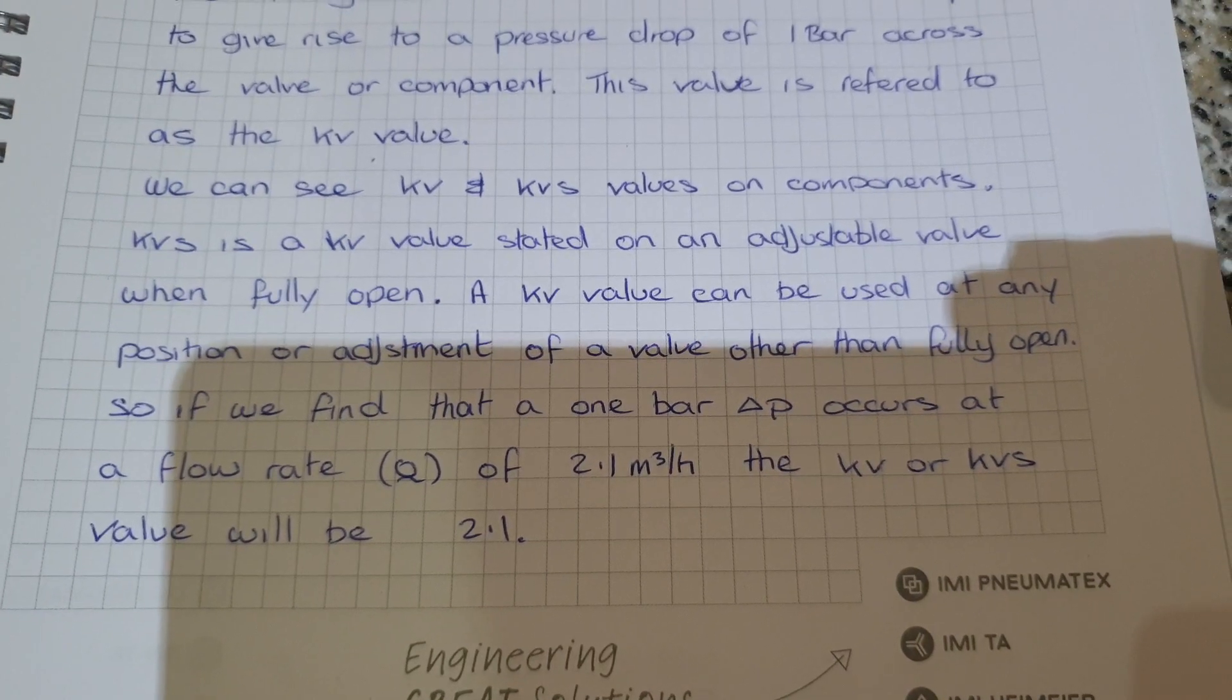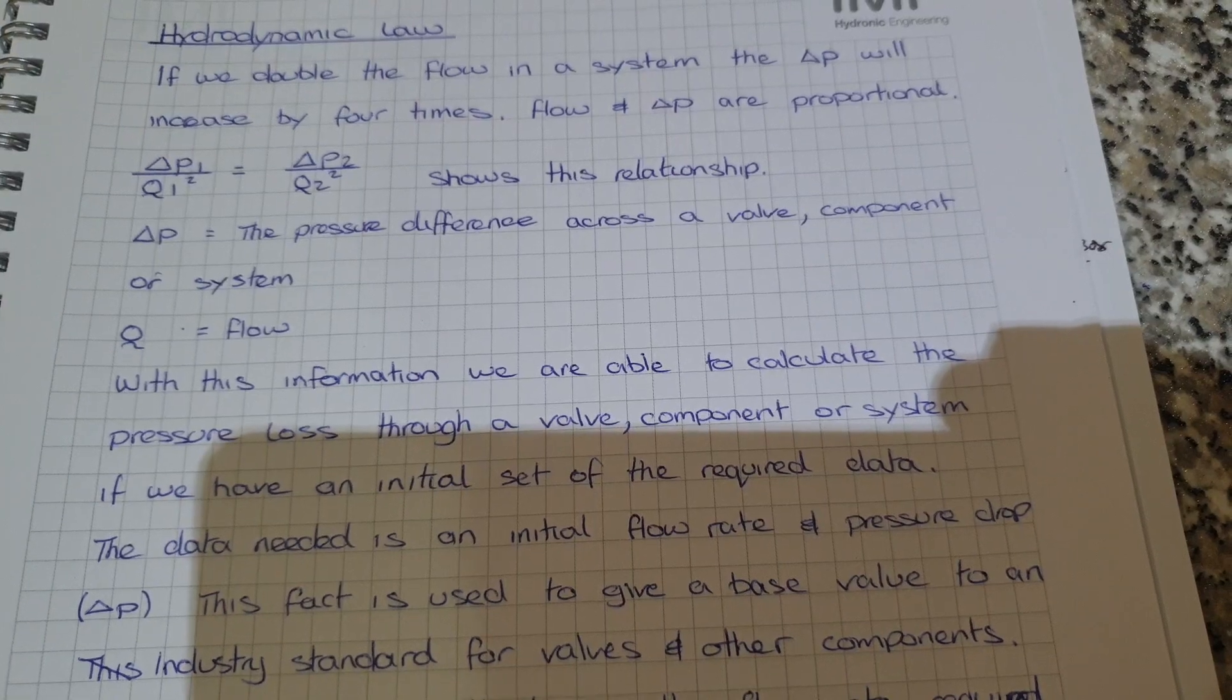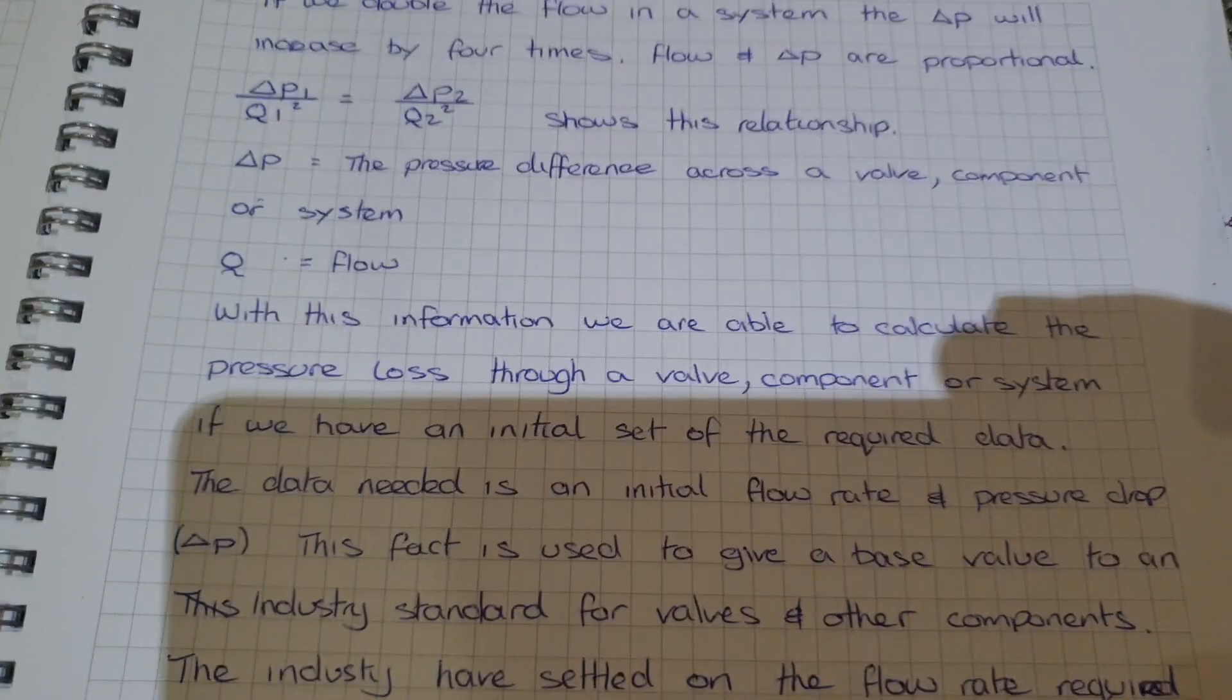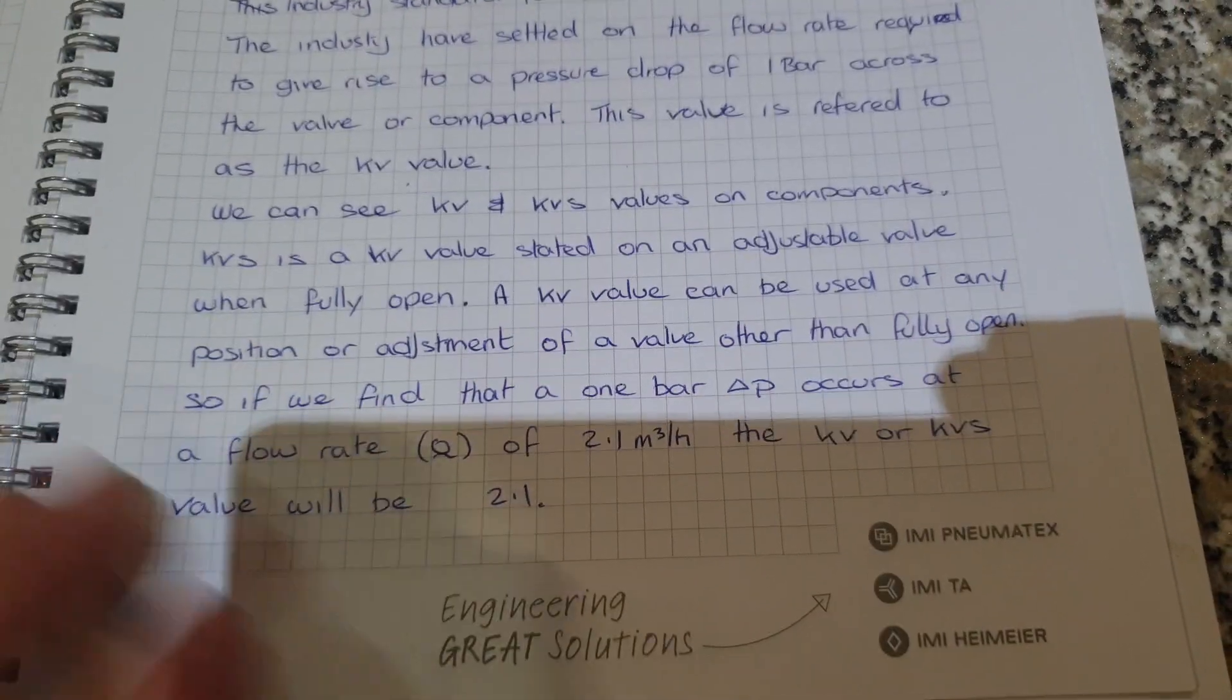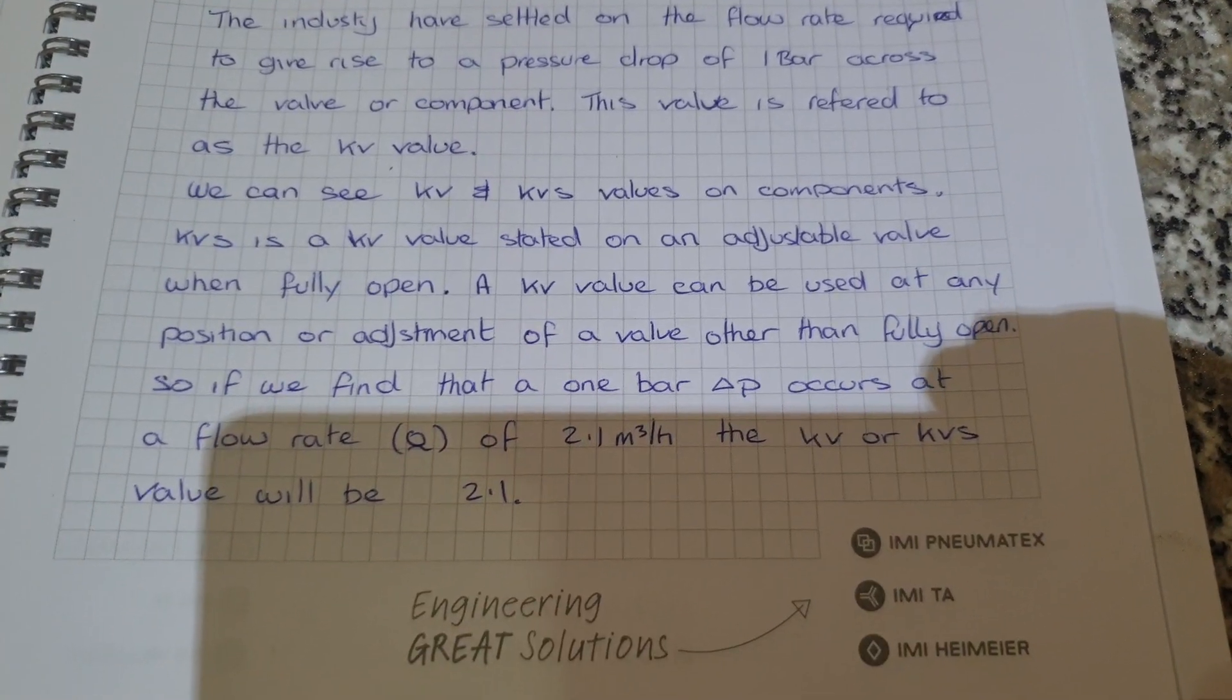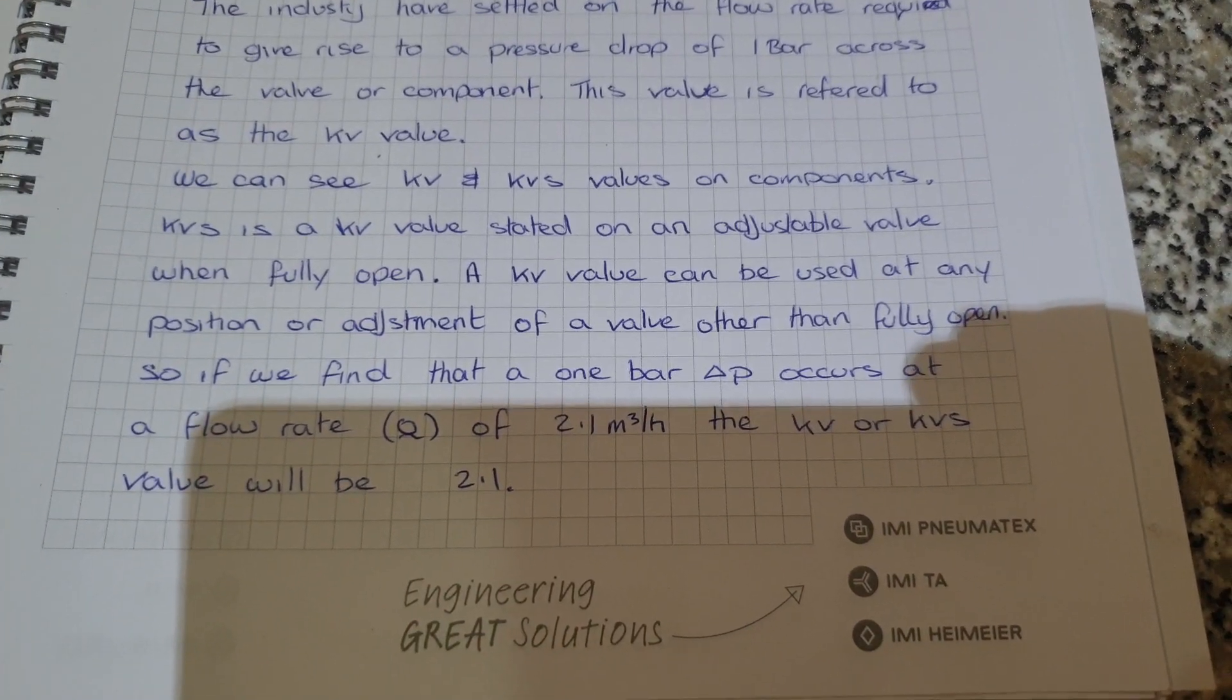Basically, the KV value is used in the industry to give us the base data needed to apply the formula at the top here to calculate the pressure drop that we'll experience at any flow we want to choose. So what we've ended up with here: we've pushed our water through our valve, we've got delta P of one bar, and the flow rate to that point was 2.1 cubic meters an hour, giving us a KV value of 2.1. If it's a control valve and it's fully open, we would call that the KVS value.